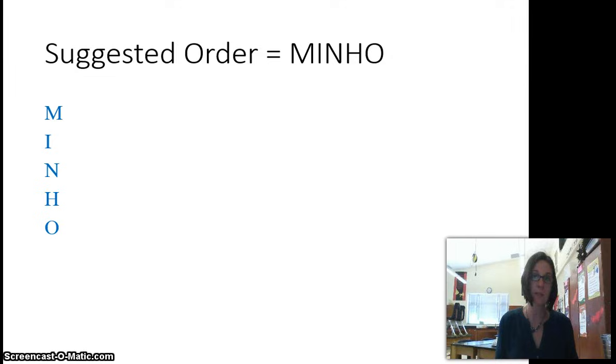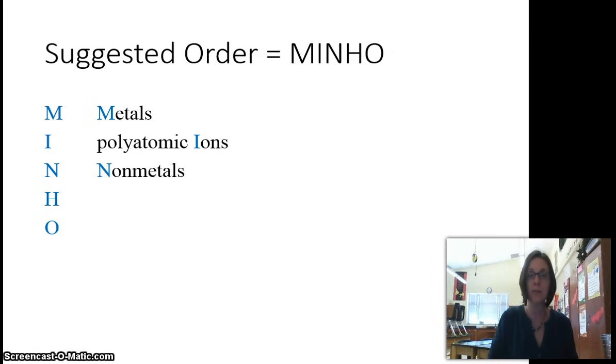When you look at an equation that's not balanced and you're like, I don't even know where to start, this is the order that we suggest. We call it MINHO. We would first start with M, any metals that aren't balanced. After you've fixed those, or if all the metals are already balanced, move on to I, polyatomic ions. This is what's new in this video because you've not seen that before. Then after you've tackled those two things, you would move on to non-metals like carbon and sulfur and chlorine, saving hydrogen and oxygen for last.